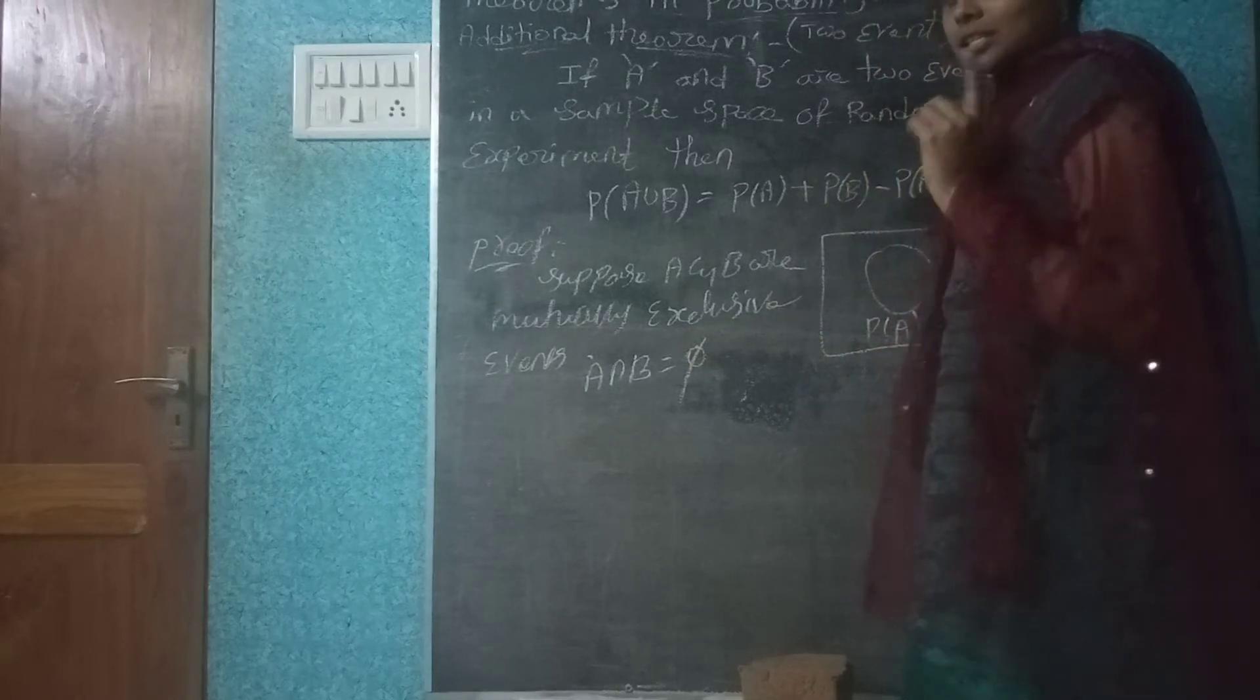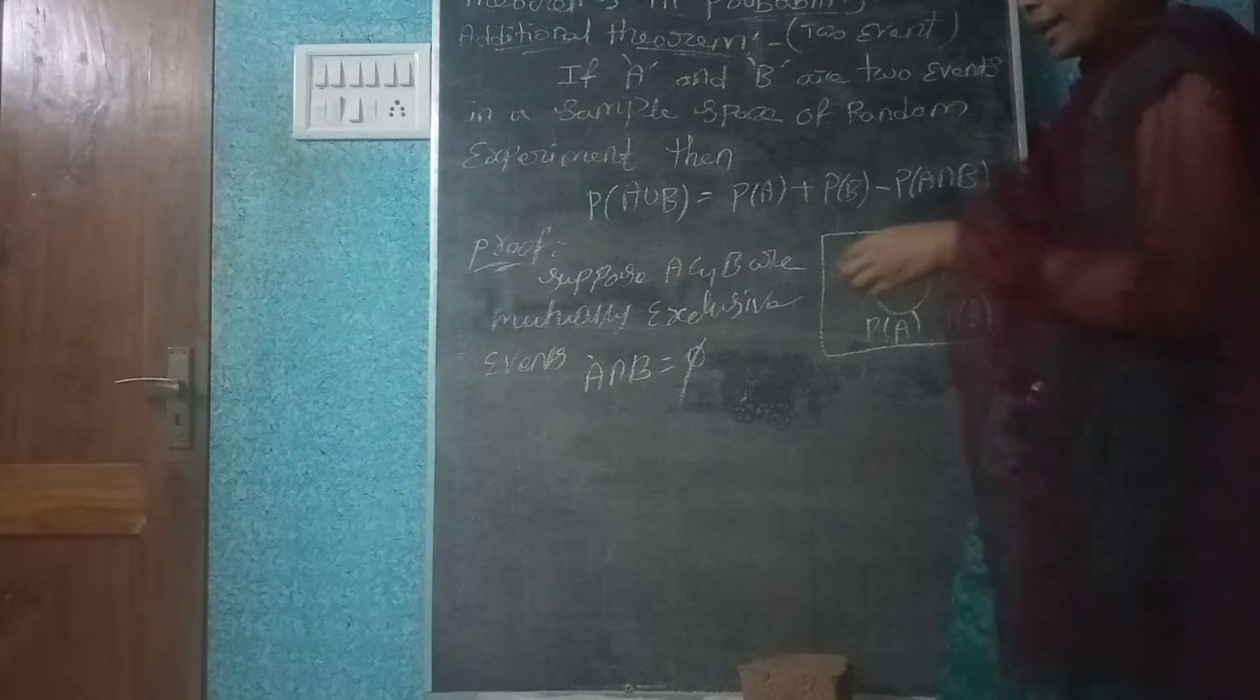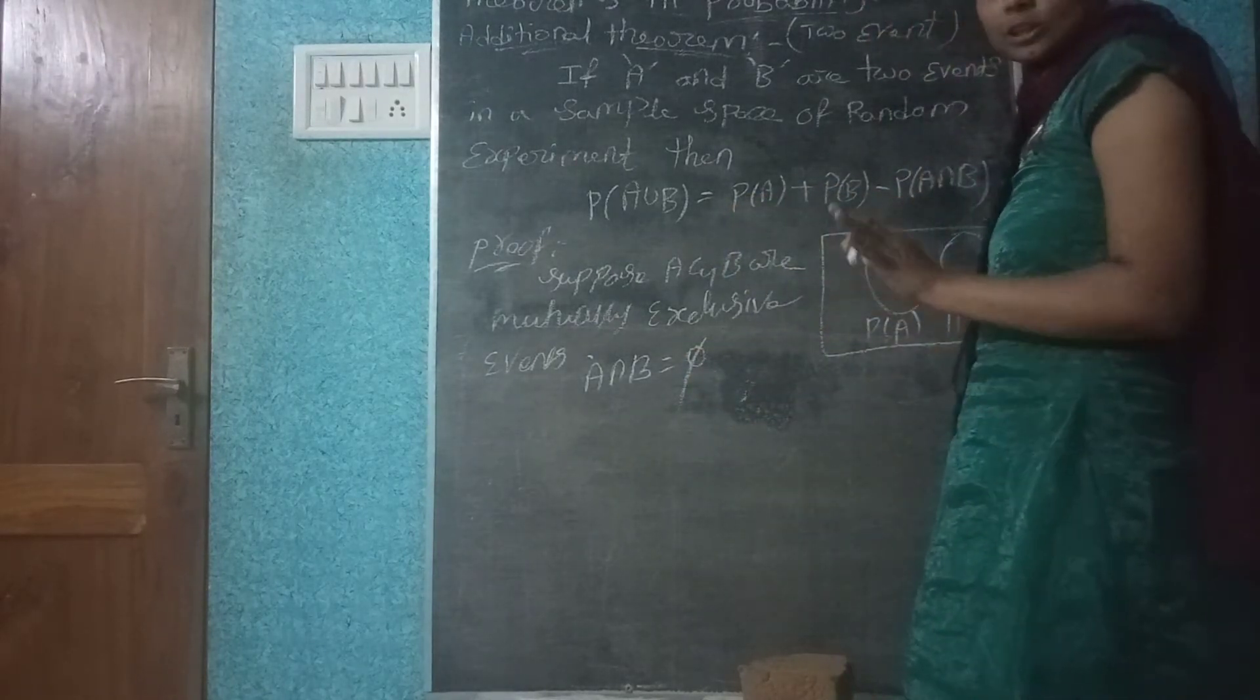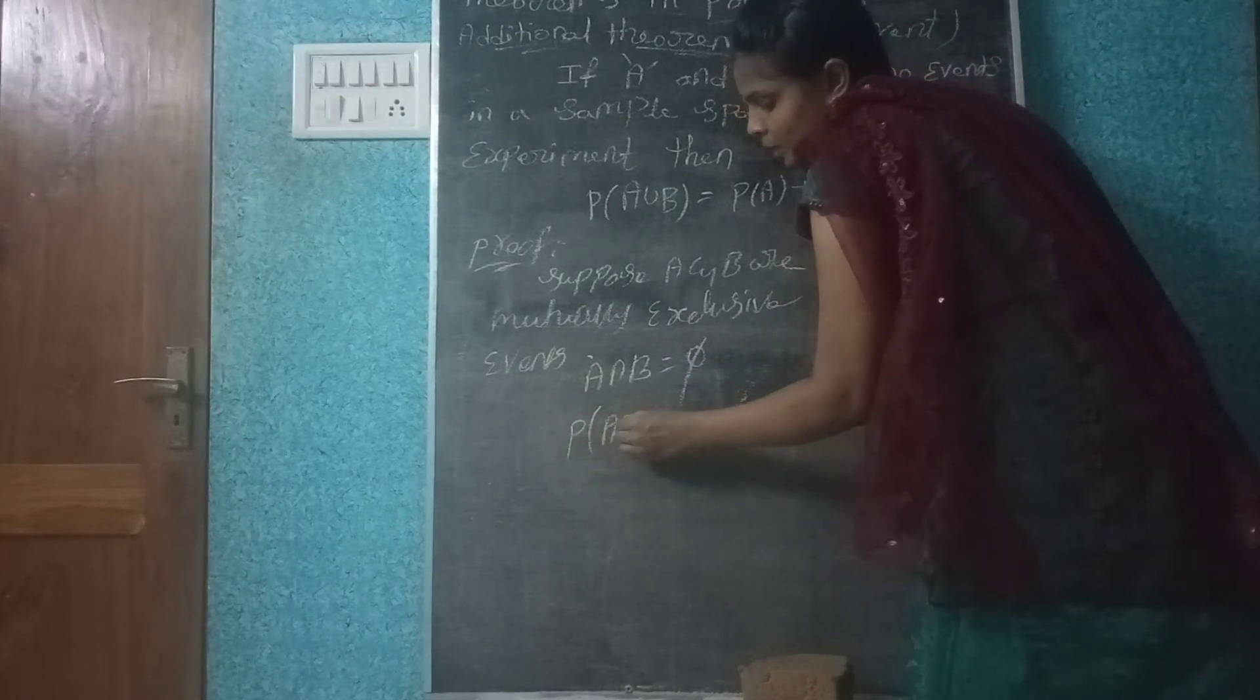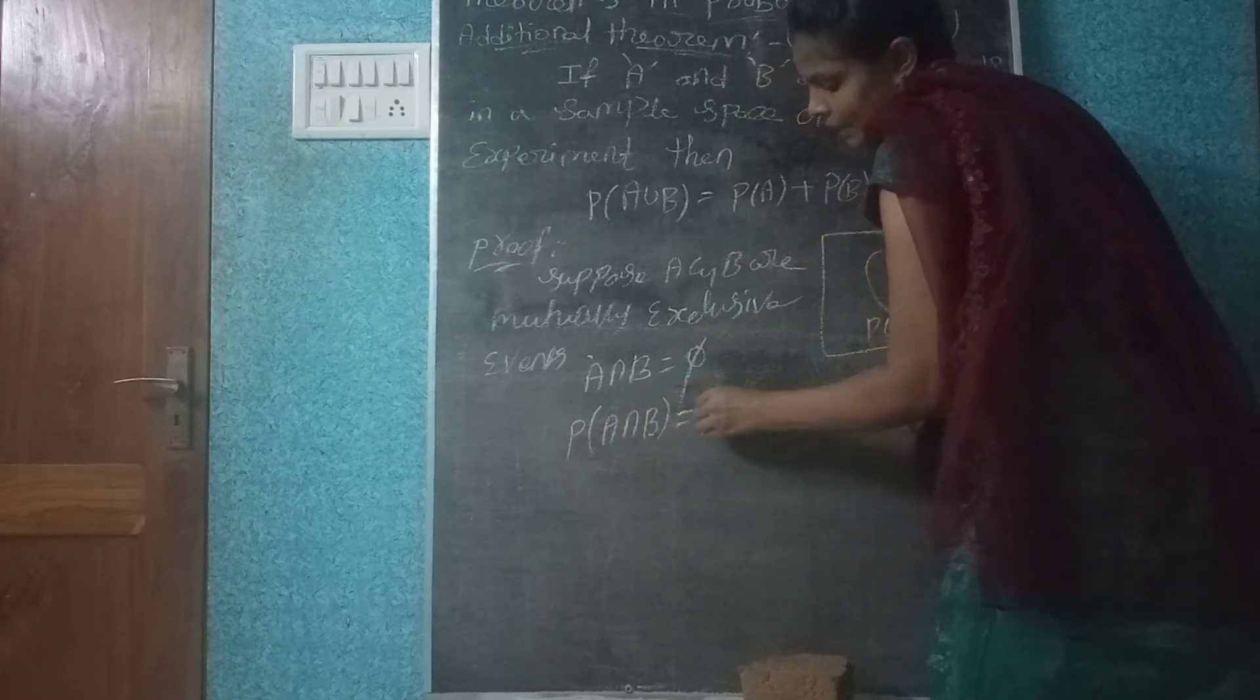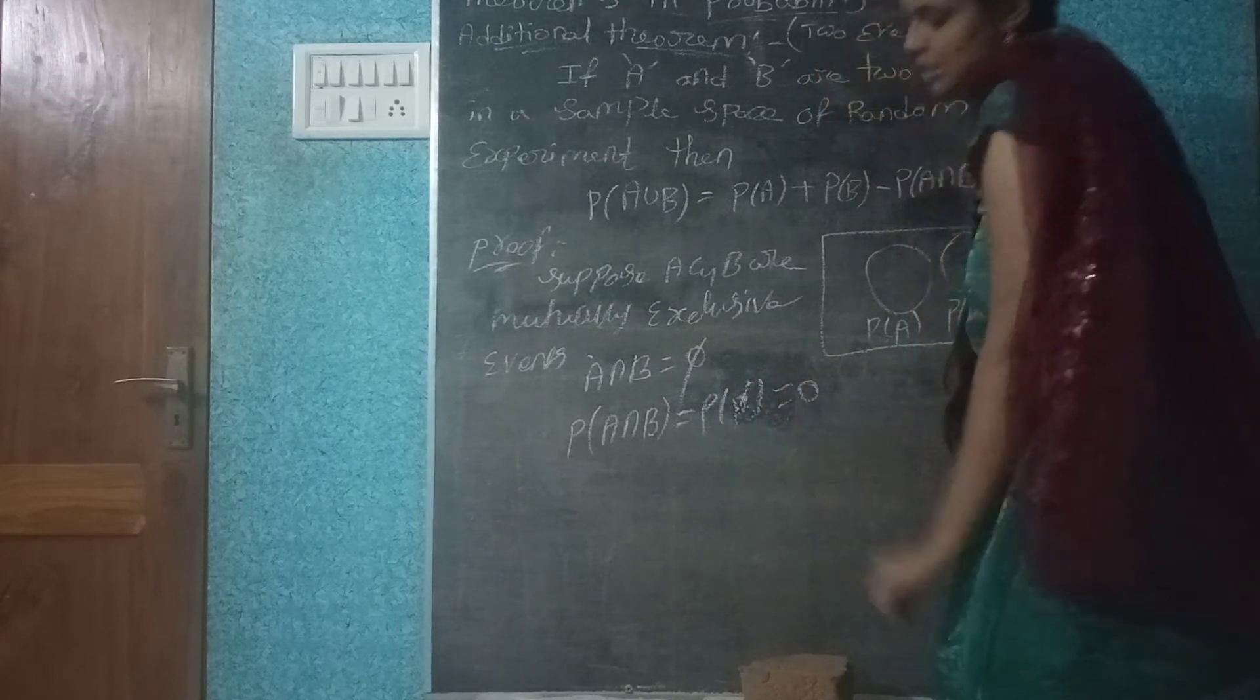Already I am going to discuss the first. So A intersection B is equal to phi. I am going to take both sides and apply probability. P of A intersection B is equal to P of phi. P of phi means P equals to 0.